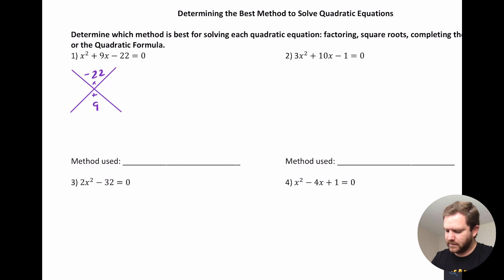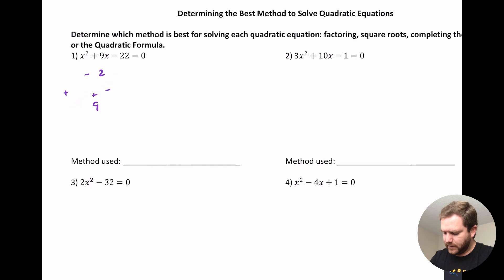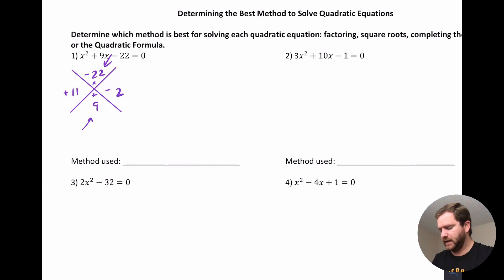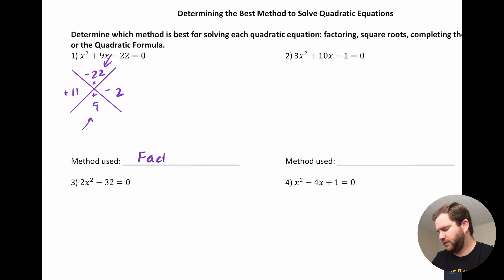Because the product is negative, we're going to get one positive and one negative number. Can we think of two factors of 22 that add to 9? Positive 11 and negative 2 work: 11 times negative 2 is negative 22, and 11 minus 2 is 9. So because that works, this is factorable, and I would use factoring.